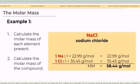Let's have the first example: the percent composition of sodium chloride (NaCl). The compound has one sodium and one chlorine atom. The molar mass of sodium is 22.99 g/mol, while for chlorine it is 35.45 g/mol. The molar mass of sodium chloride is 22.99 + 35.45 = 58.44 g/mol.